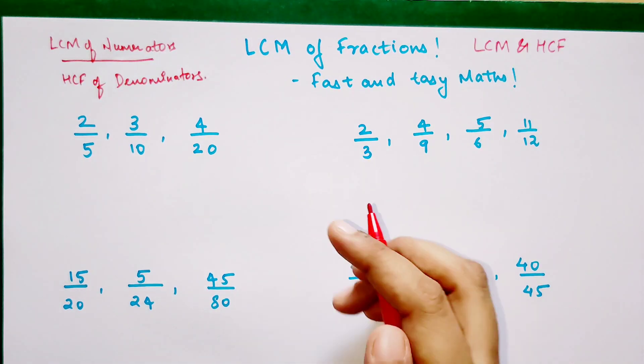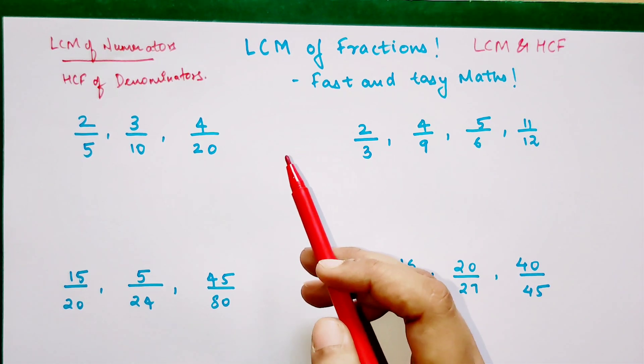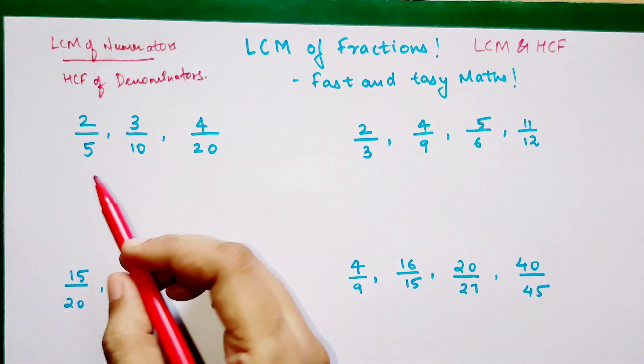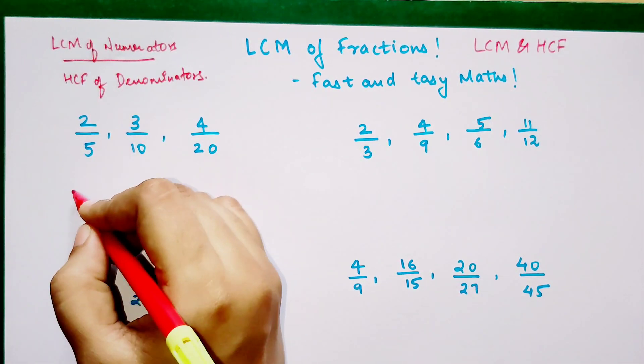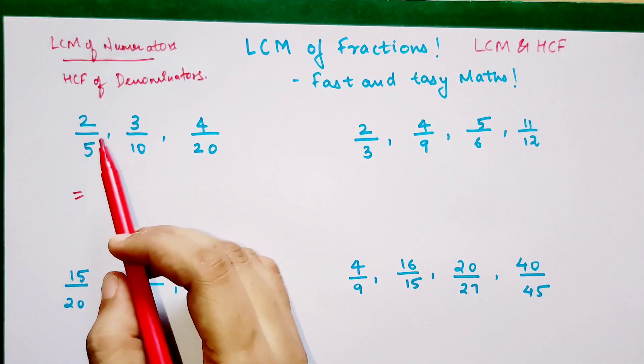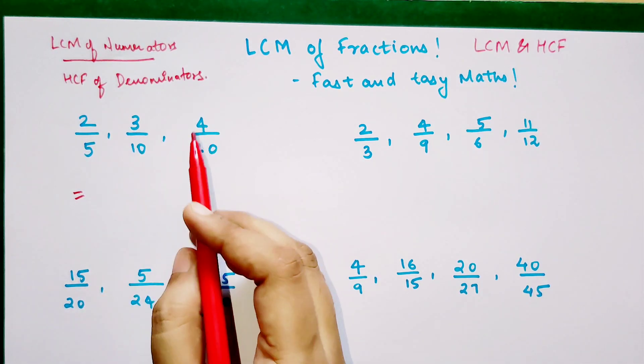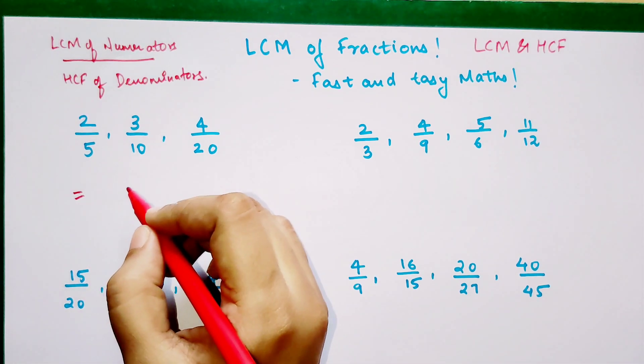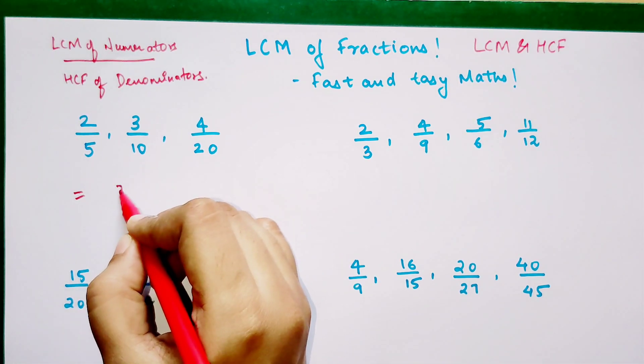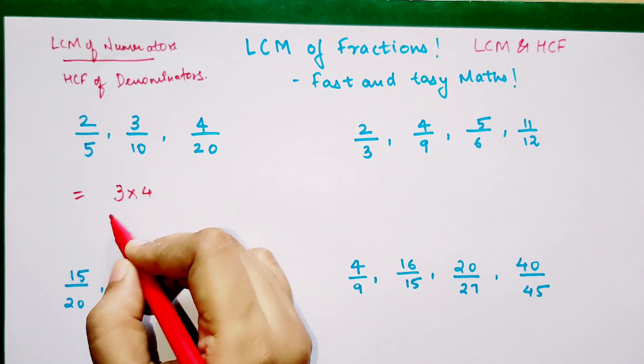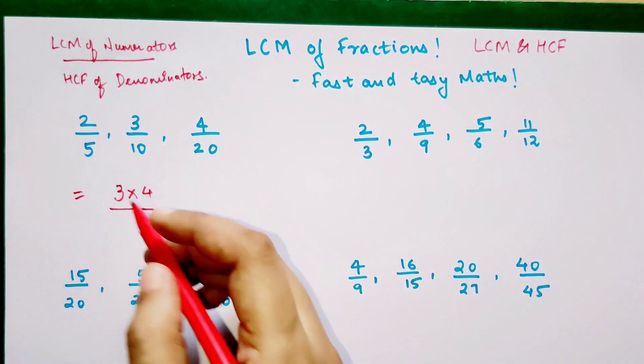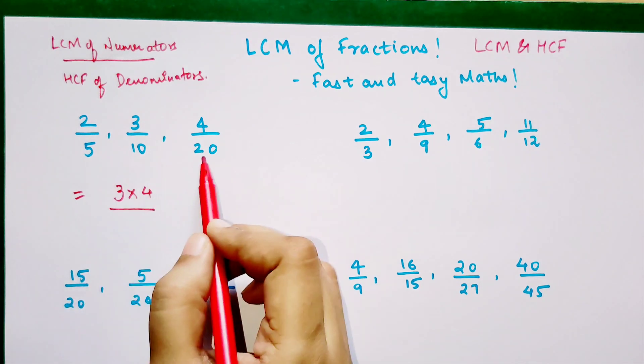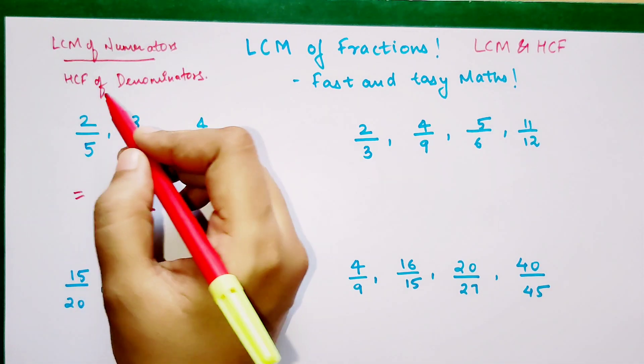So let's begin using this formula. Over here, what will be the LCM of the numerators, which is 2, 3, and 4? Your final answer would be 3 into 4 divided by 5, 10, and 20, and out of all these three we need to take the HCF.